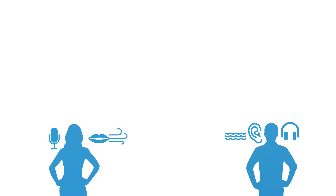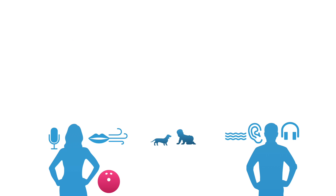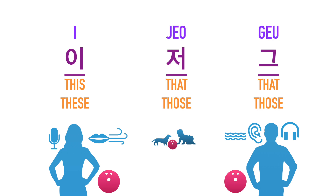When you indicate something that's close to the speaker, it's the same as in English. So whether or not it's also close to the listener, as long as it's close to the speaker, you say 이 — as in 'this,' which we learned in lesson 10. Despite the concept being a little confusing, I would emphasize that it's still worth familiarizing yourself with 그 because it has other meanings and usages that are fairly useful.